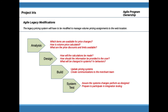Our legacy system is very complex, and we've decided to use a more traditional waterfall approach to making changes to it. We'll be doing analysis to determine which items are available for price changes, how the volume price changes should be calculated, and what the discount limits are. In design, we'll look at how calculations will be made, how information should be provided to the user in their decision-making process, and what changes will impact other systems. We'll have to build the updates into the pricing systems and create communications to the merchant team for them to understand what we're doing and why. System testing will assure that the changes we've made work and that we're prepared to participate in integration testing.